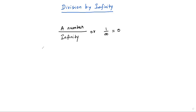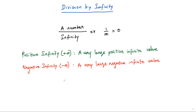To get the answer for this question, first we need to be aware of what infinity is. There are two types of infinity in mathematics: positive infinity and negative infinity. Positive infinity refers to a very large positive infinite value, and negative infinity refers to a very large negative infinite value.